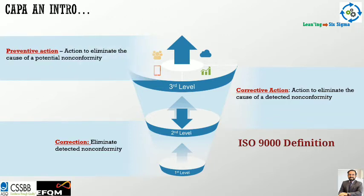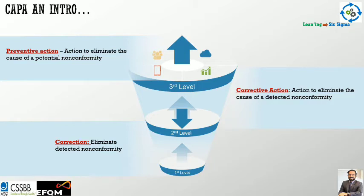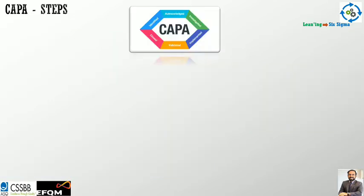The third level is to eliminate the cause of a potential non-conformity, learning from the mistakes and defects that have happened. From the causes found and new solutions brought in, you relate them to what else can go wrong in a given scenario or process design. That becomes preventive action. This is a generic explanation for CAPA from ISO 9000, starting with containment and correction.